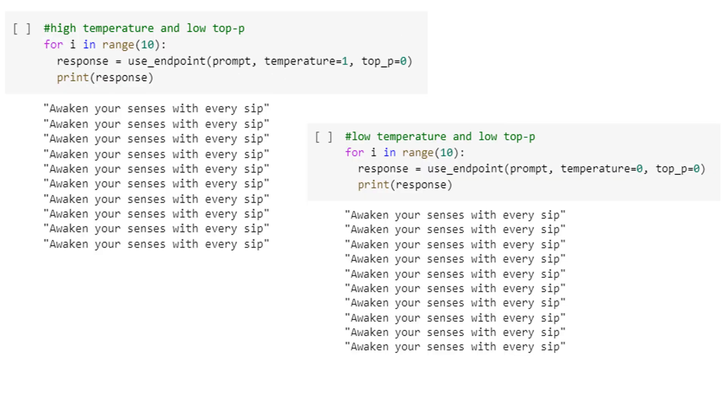These are to showcase what happens if we set zero to either of these two parameters. Here it will reproduce the same results in all the iterations. So this is the basic idea behind Top_P and Temperature parameters in ChatGPT as well as other language models.